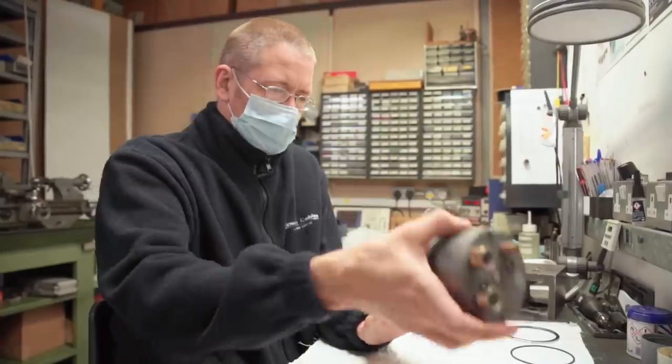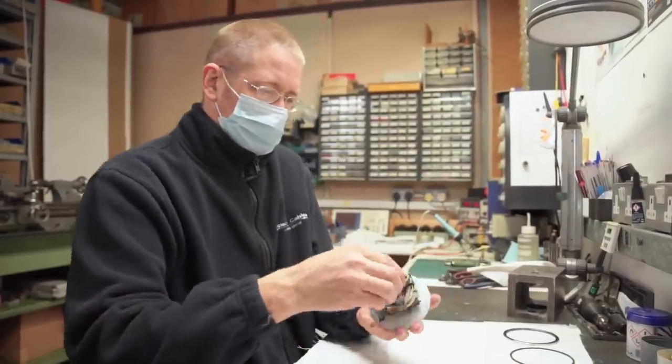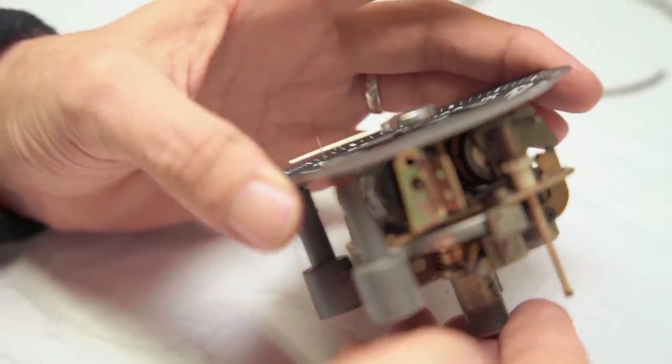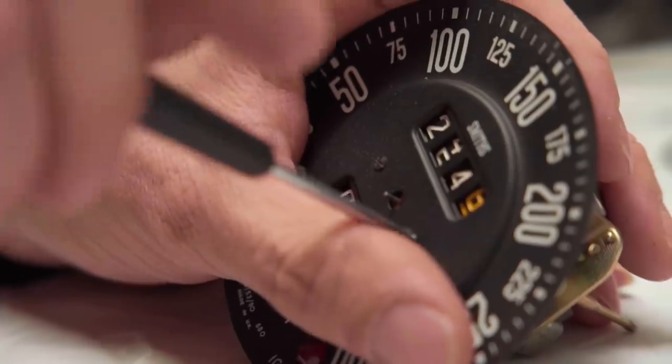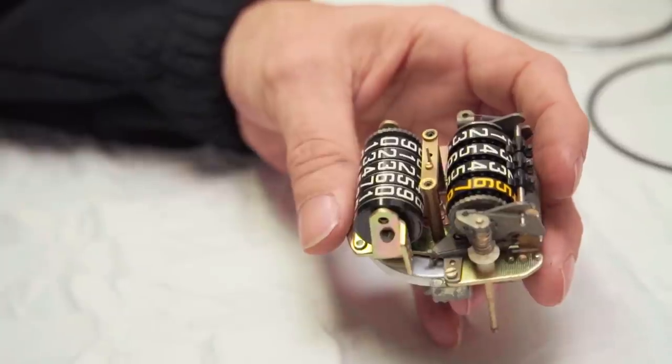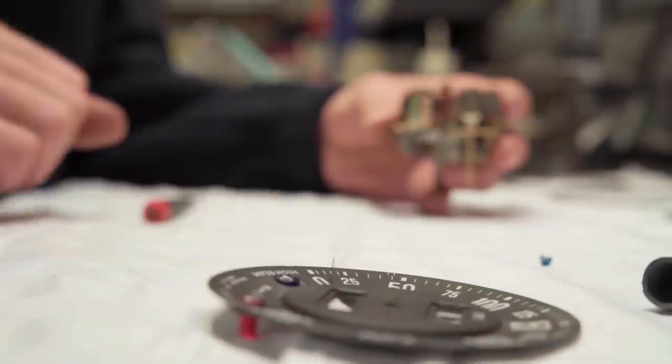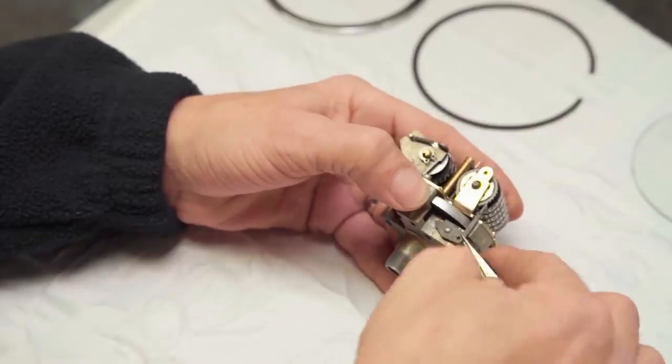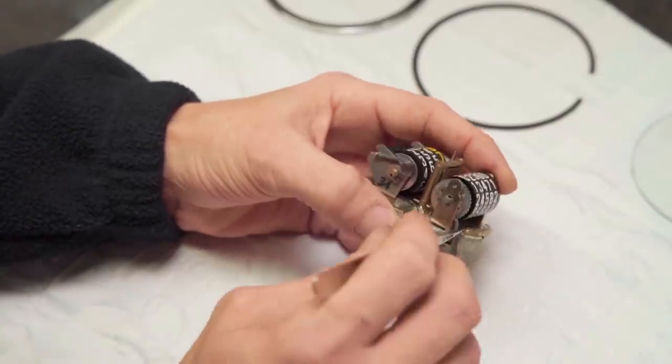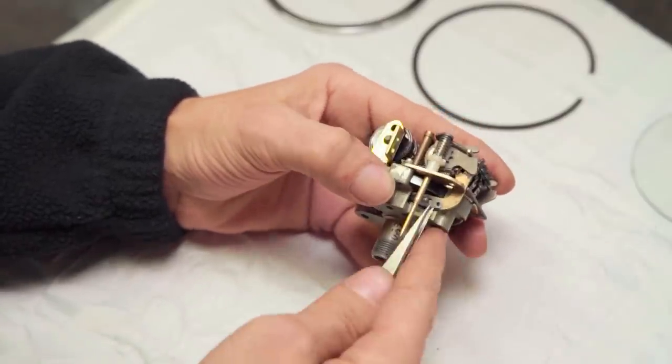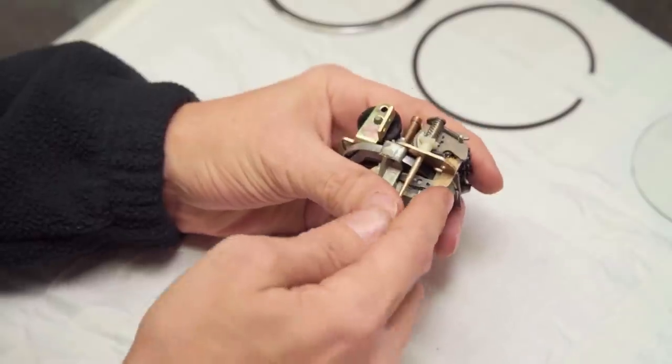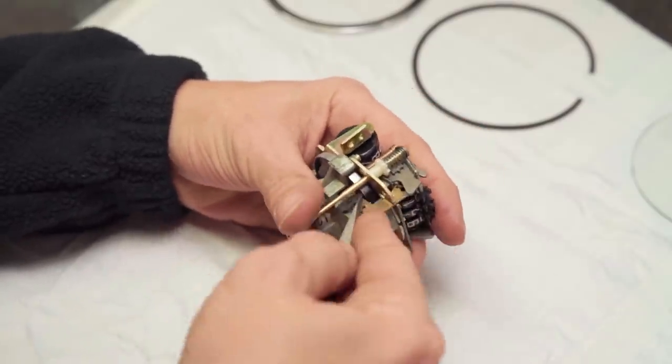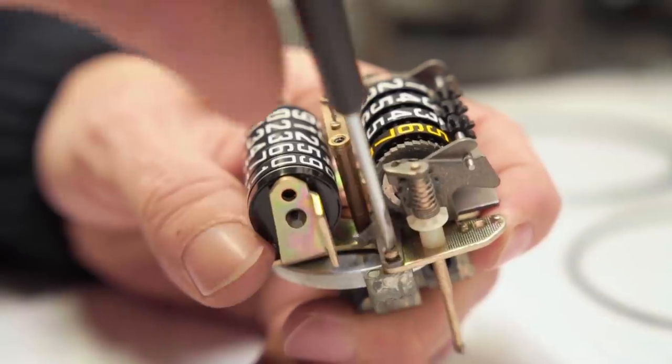With the casing removed we can see the internals. Next I'm removing the dial screws and I'm going to lift the dial carefully from the movement. First we remove the pole arms and then the counter gears.